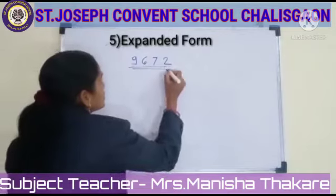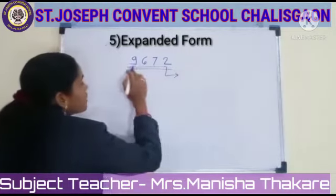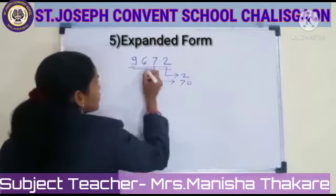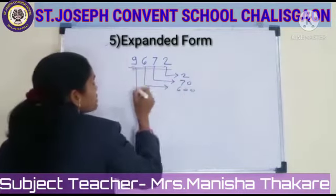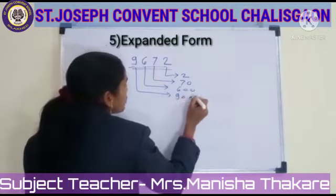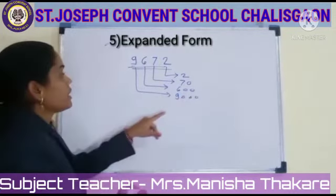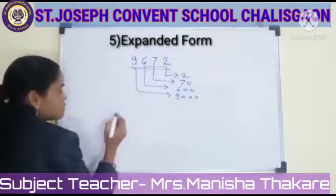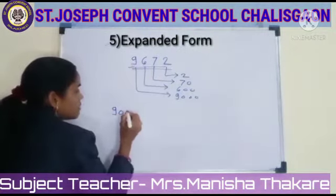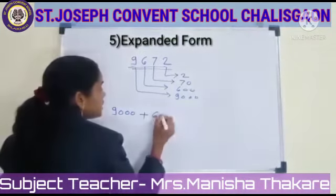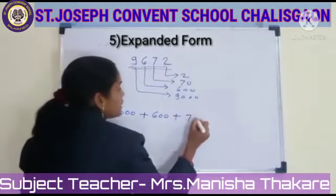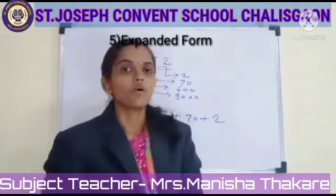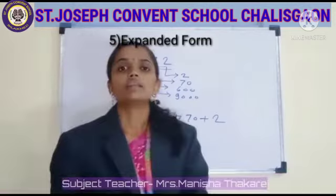For example, in the number 9,672: 2's Place Value is 2, 7's Place Value is 70, 6's Place Value is 600, and 9's Place Value is 9,000. Now we add the Place Values starting from the highest: 9,000 + 600 + 70 + 2. This is the Expanded Form. Very simple — let's revise.